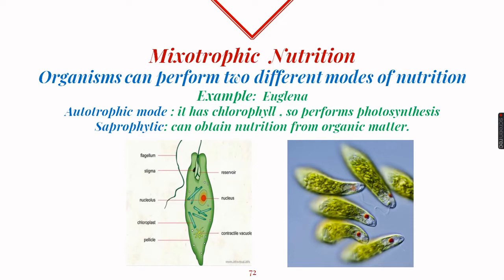Apart from these three main types, there are certain other types of heterotrophic nutrition. One of them is myxotrophic nutrition; for example, Euglena performs two different modes of nutrition. Because it has chlorophyll it can perform photosynthesis, giving it an autotrophic mode. But if it does not get sunlight for some days, it relies upon saprophytic mode of nutrition. Euglena is unique in that it has characteristics of plants, like chlorophyll, and also characteristics of animals, in that it can move around with the help of flagella. So it is considered a connecting link between plants and animals.